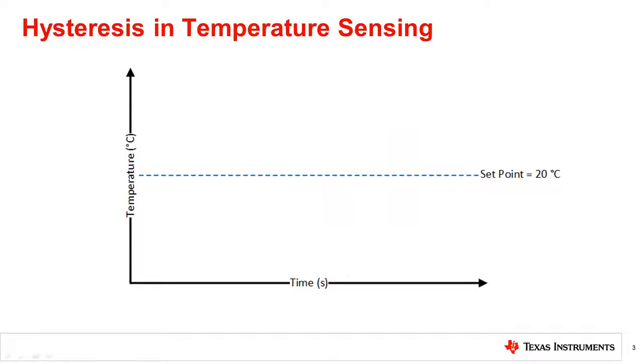Hysteresis is often used in specialized temperature sensors, also known as temperature switches, to act as a control mechanism for a system. To better understand why hysteresis is needed for sensing temperature, let's take the example of a thermostat.